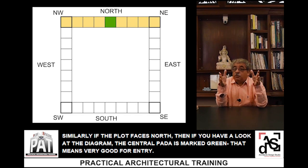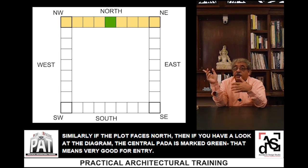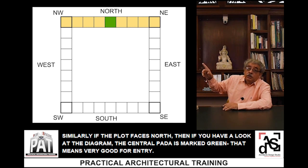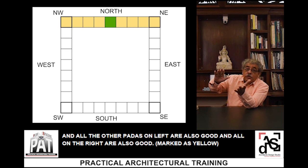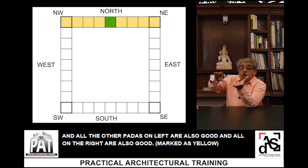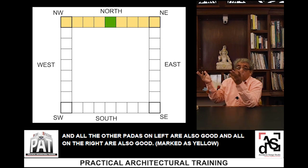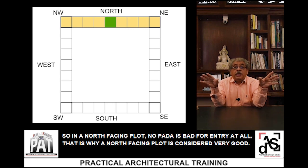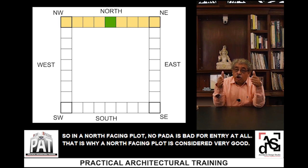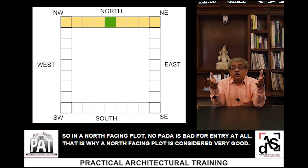Similarly, if the plot faces north, the central Pada is marked green — meaning very, very good for entry. All the Padas on the left are also good, and all the Padas on the right are also good. So in a north-facing plot, no Pada is bad for entry at all. That is why a north-facing plot is considered very good.